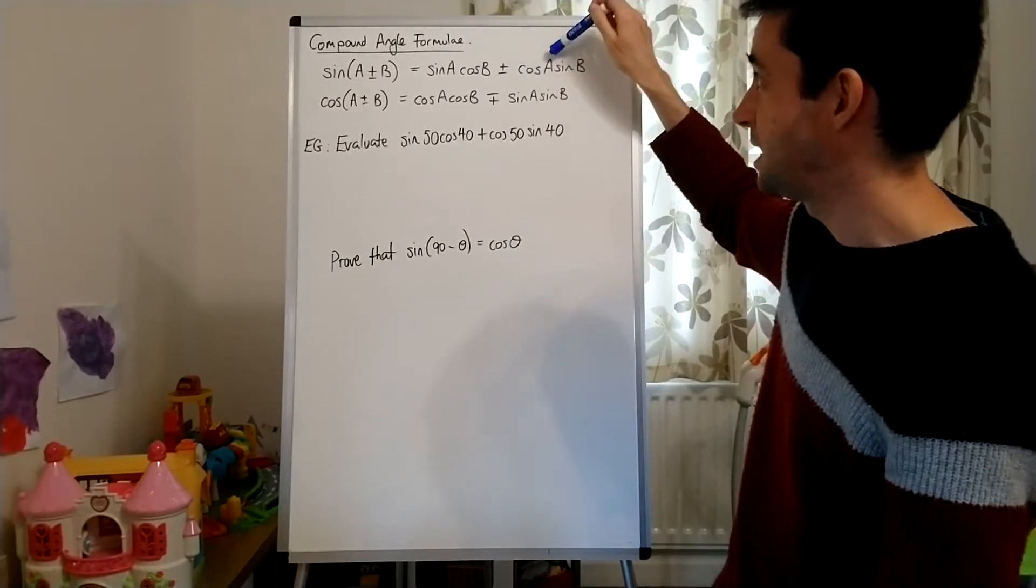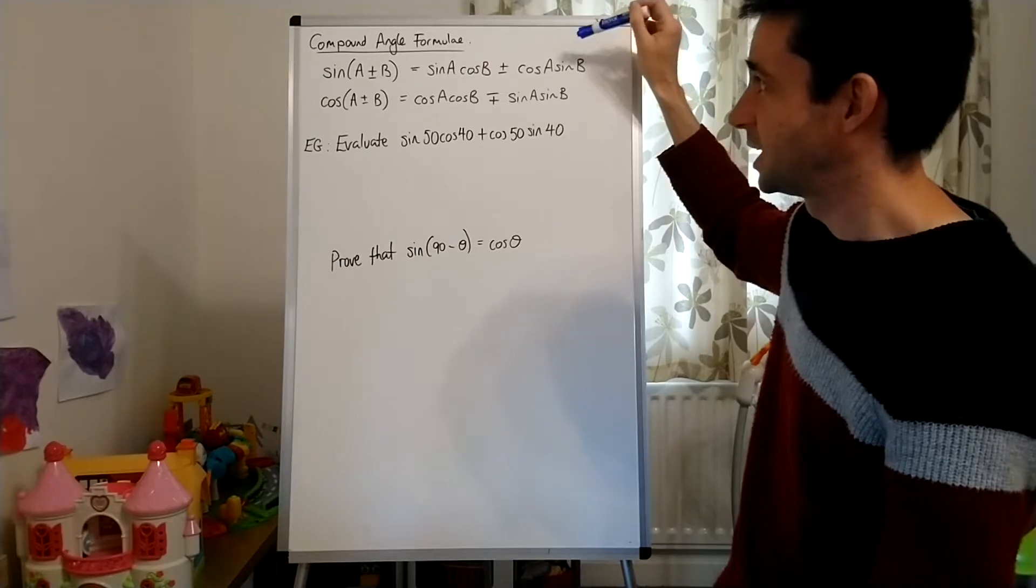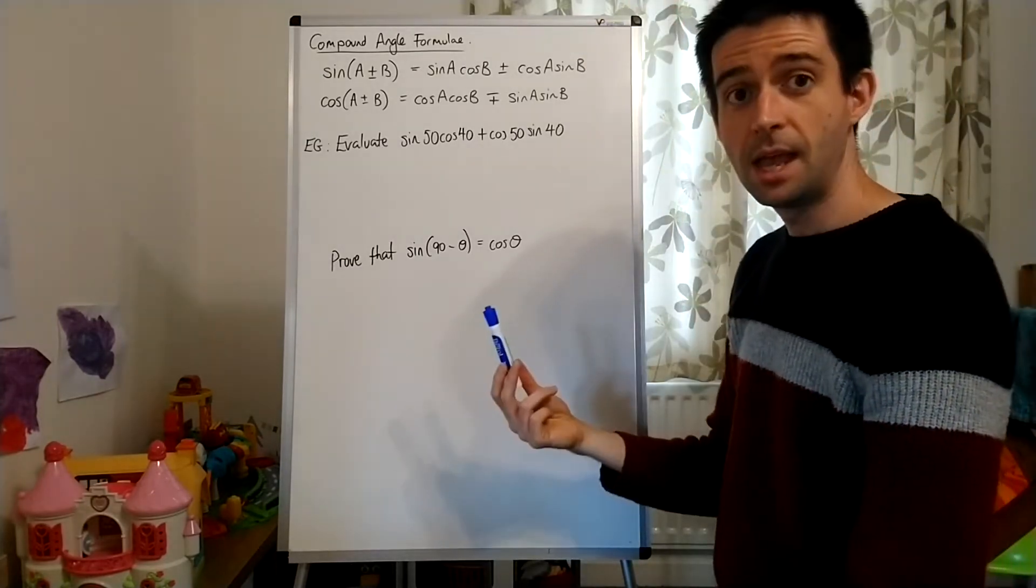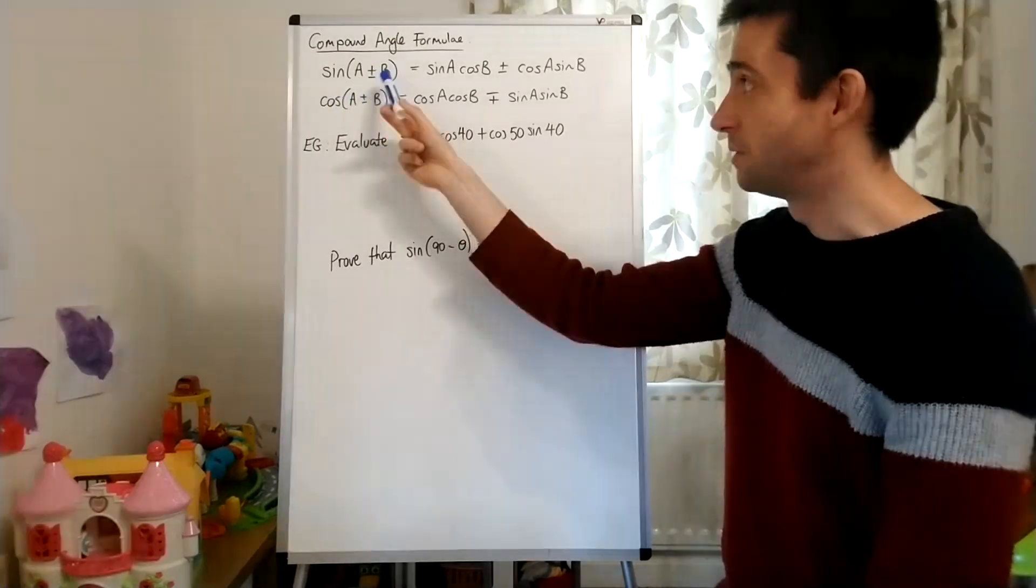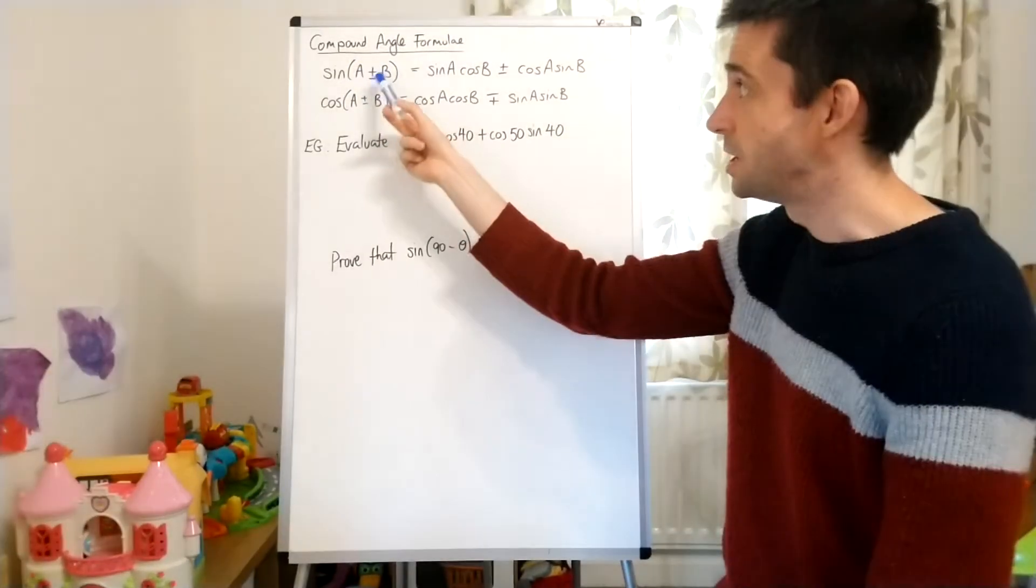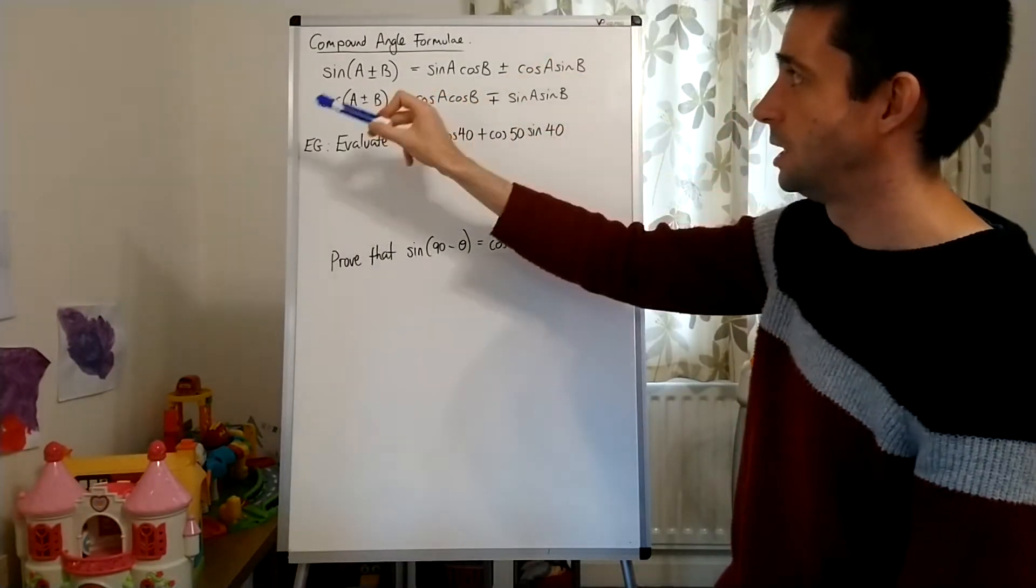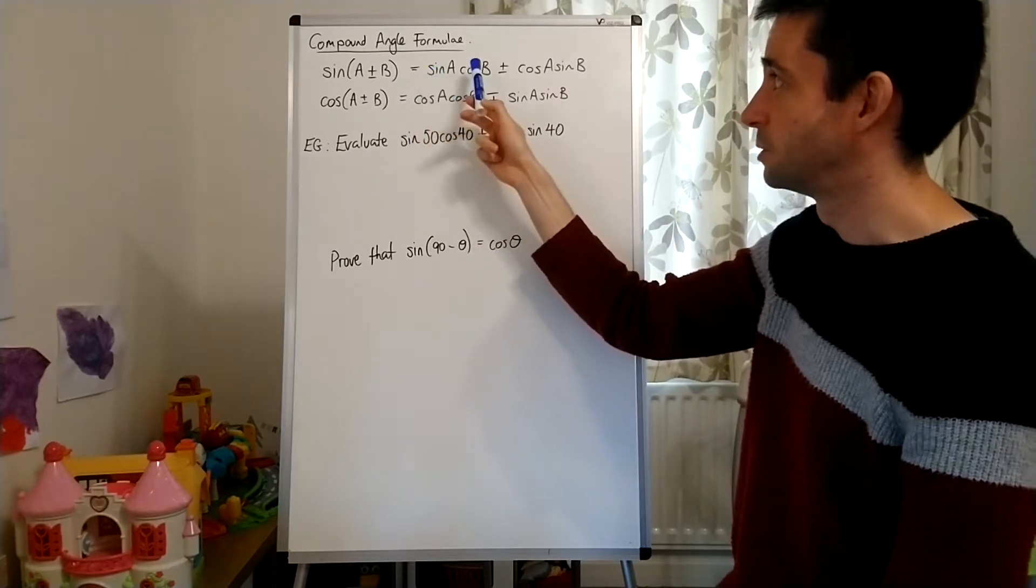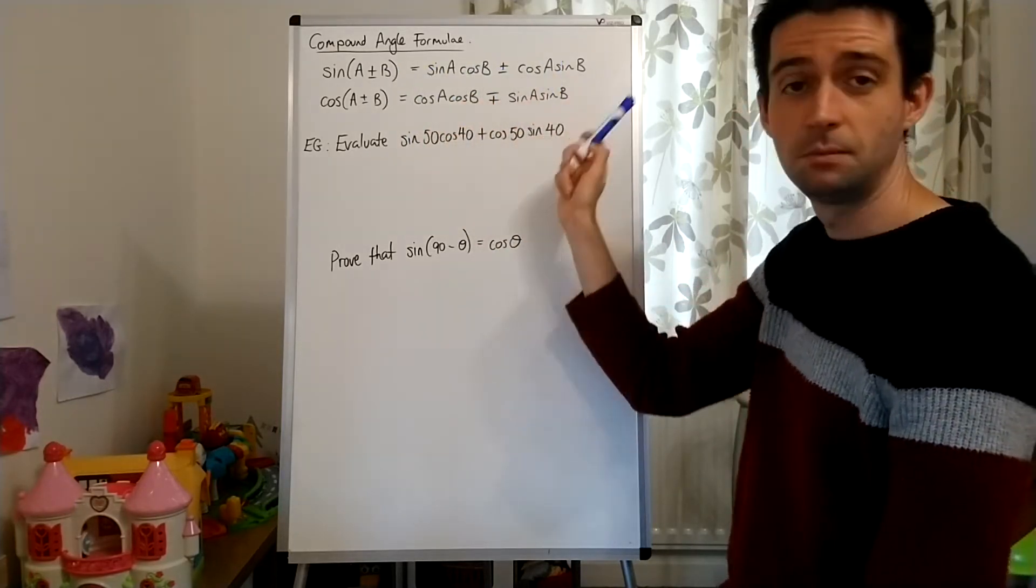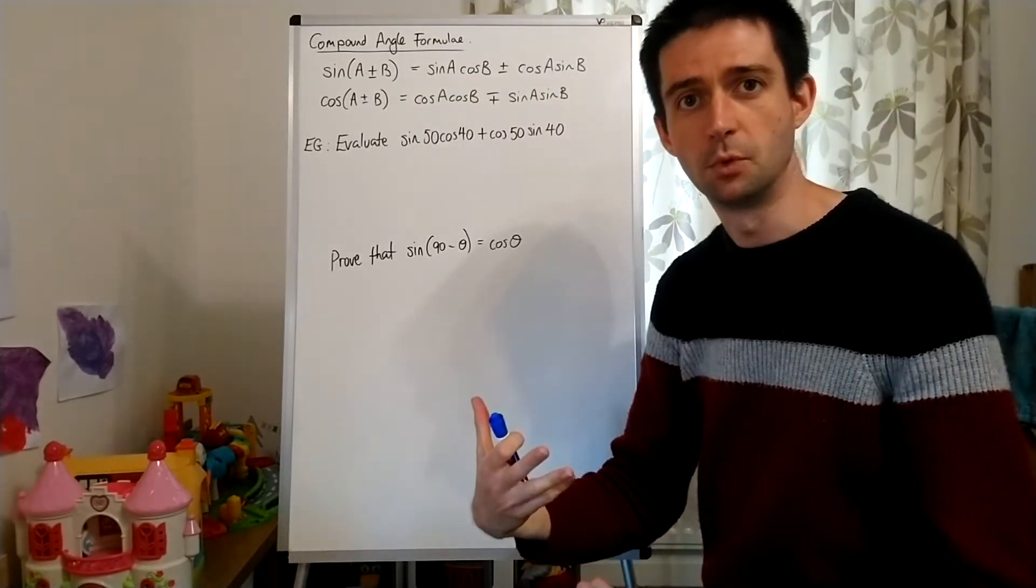Plus cos A, so cos of the first angle, multiplied by sine B, sine of the second angle. If rather than the sum of A and B, you have the difference, A minus B, all that changes is the plus in the middle becomes minus. So sine of A minus B would equal sine A cos B minus cos A sine B. And we'll see how this is useful in a moment.